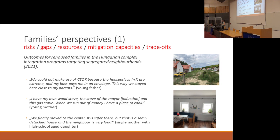The first quote: 'We couldn't make use of CSOK — that lump sum subsidy you can get for housing construction if you have kids, which in Hungary nowadays is pretty generous — because the house prices in my village are extreme and my boss pays me in an envelope. This means I don't have formal income, so I'm not eligible for that lump sum. This way we stayed here close to my parents.' This quote says a lot: I don't have access to public policy instruments because they're not designed to tackle my housing precarity, so I opt for plan B. Luckily, my parents as an informal social network can jump in and support me. So the new housing position helps in a way but shows so many other vulnerabilities around my life.